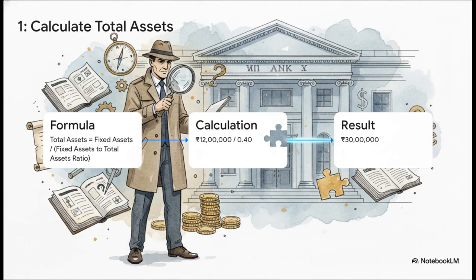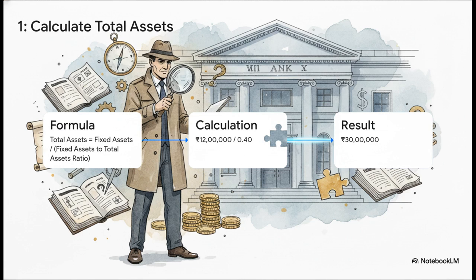Our first move is a big one. It defines the entire scale of the company. The clue tells us that our anchor, fixed assets of 12 lakhs, represents 40% of the company's total assets. So, a simple division, 12 lakhs divided by 0.40, reveals the total size of the balance sheet, 30 lakh rupees. Just like that, we know the total value this company controls. You see? There's that chain reaction in action.